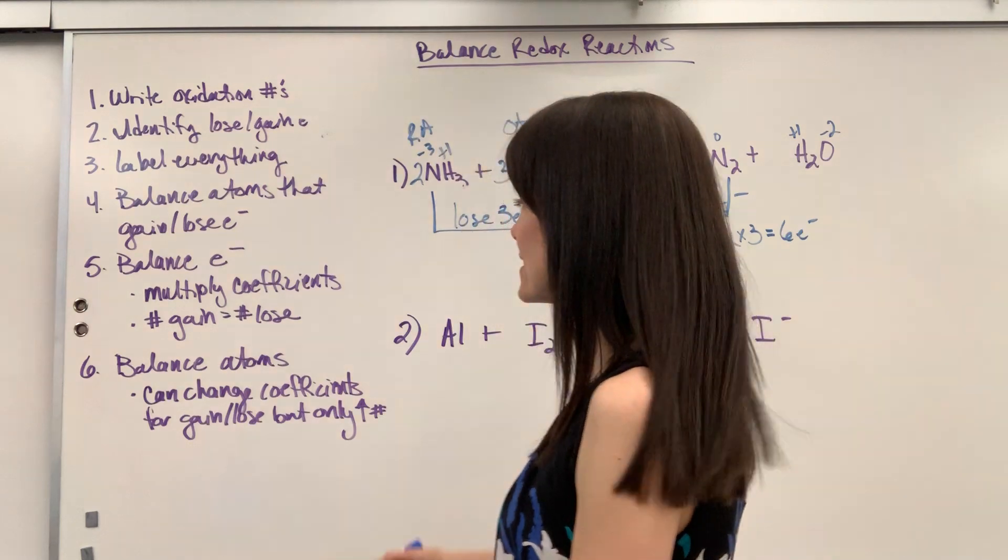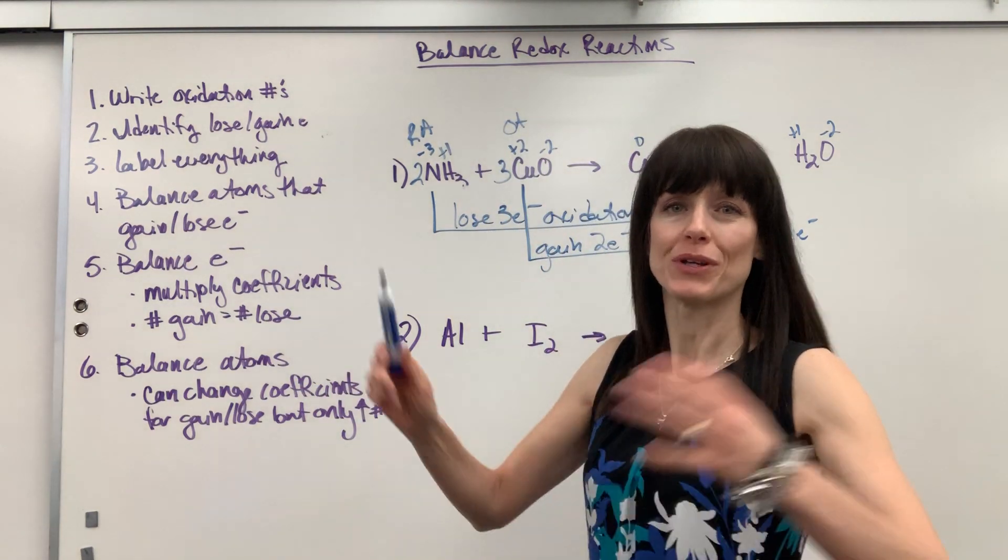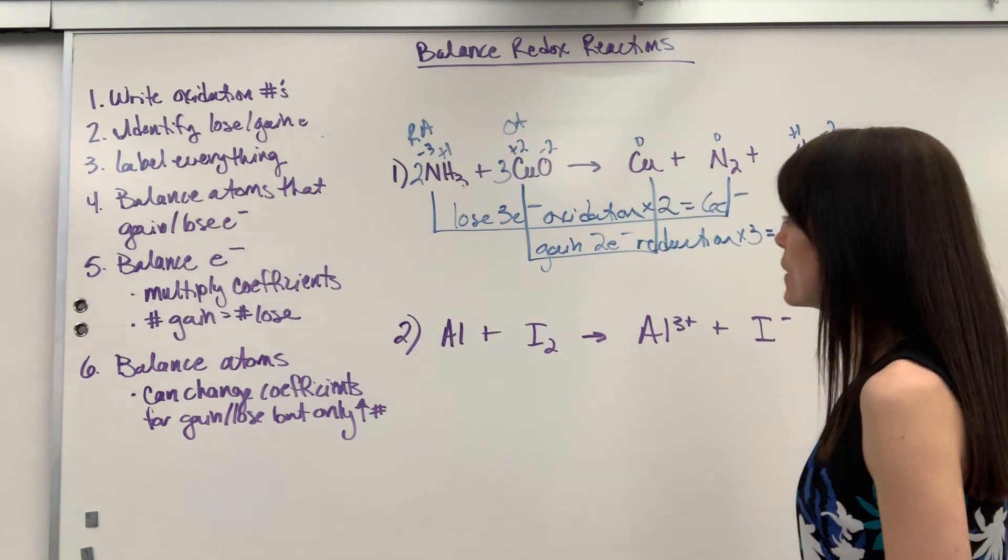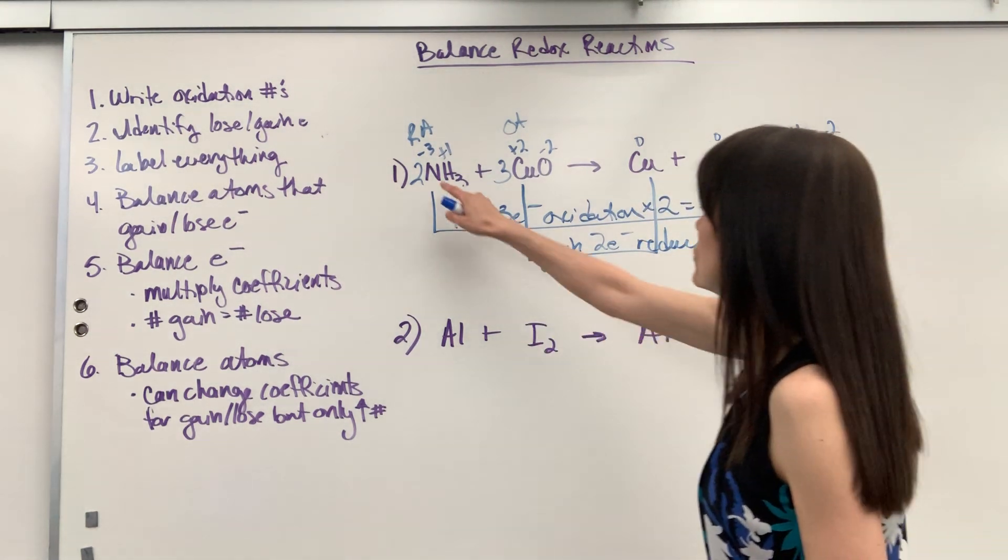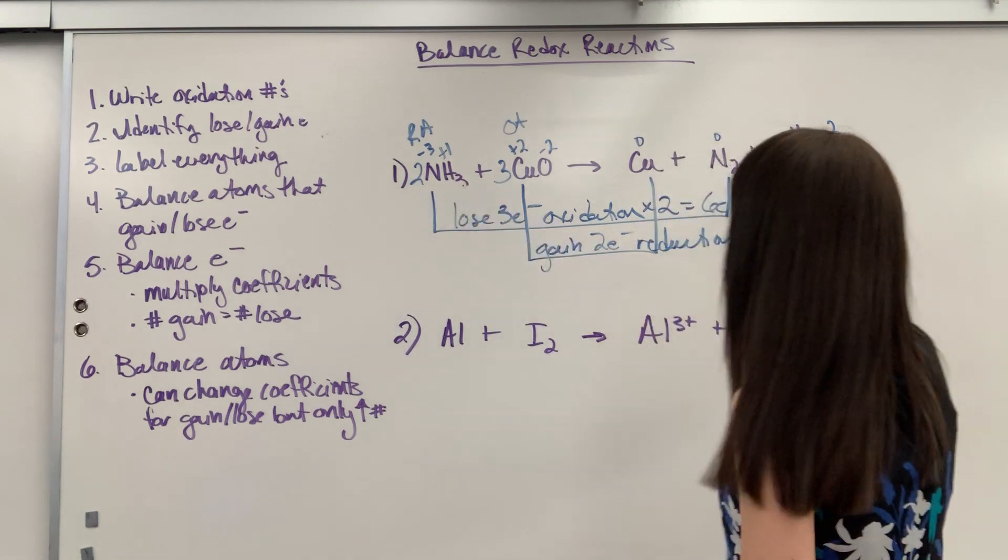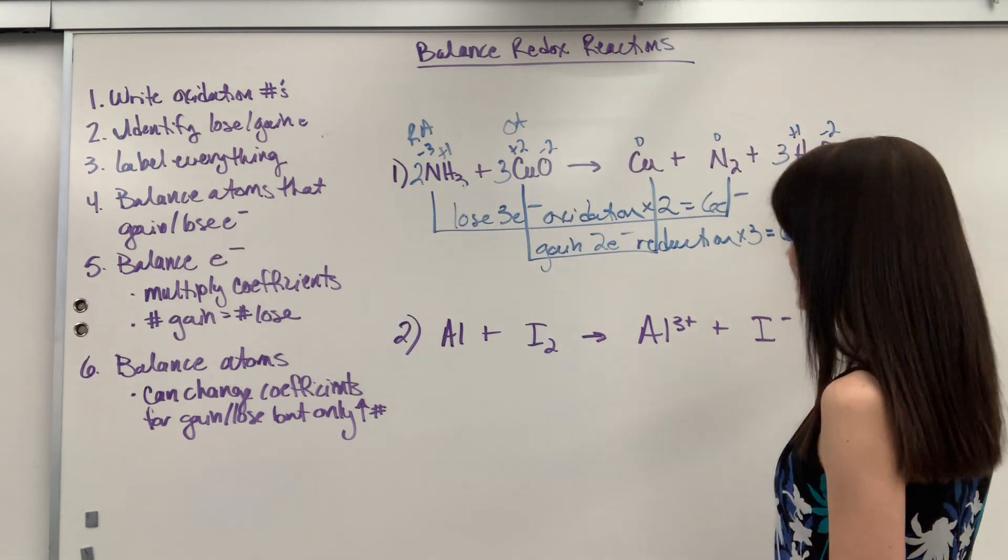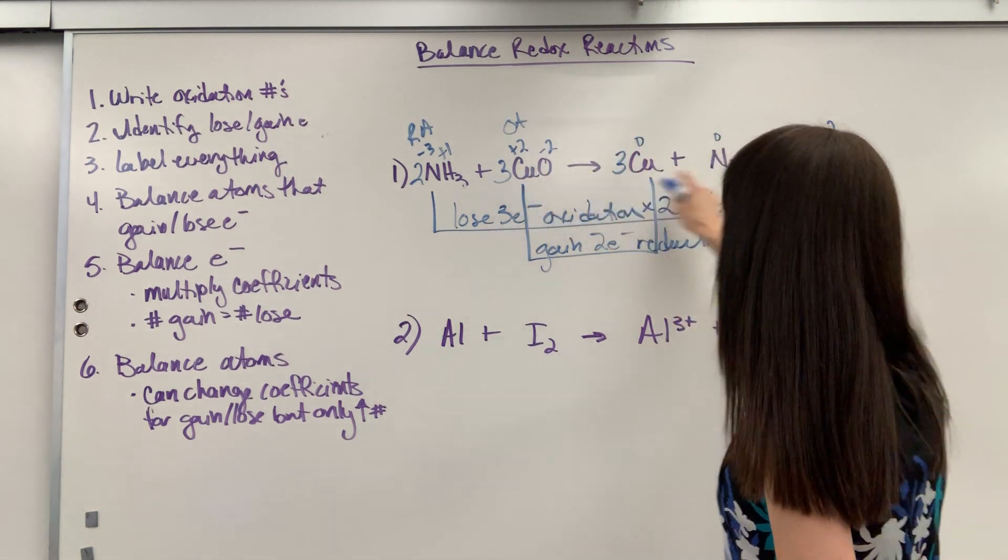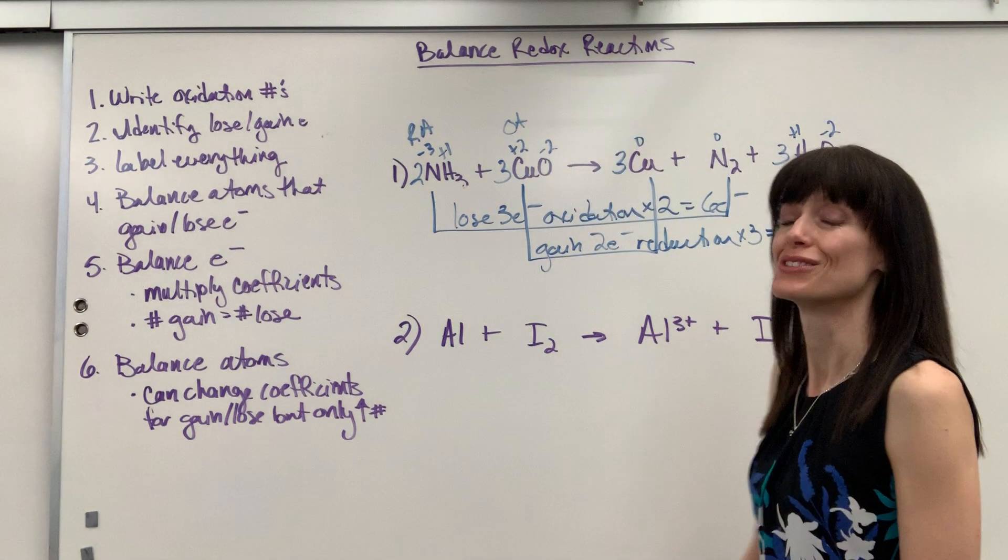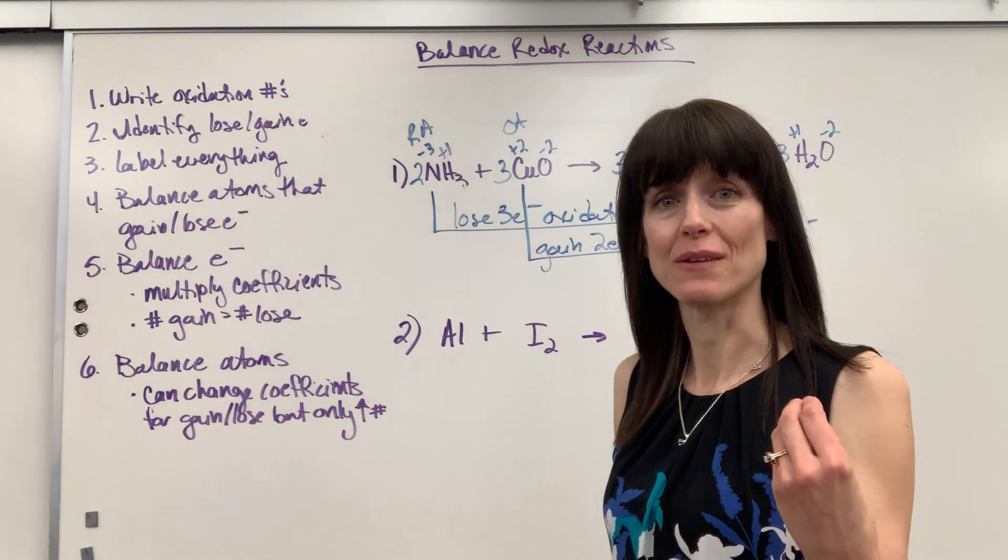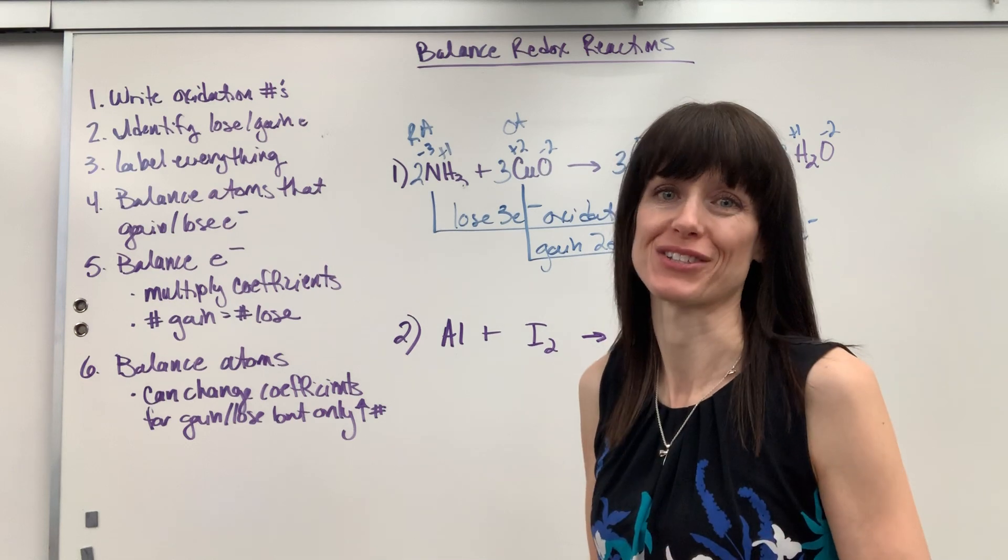Okay, last part. This is kind of the easy what you've done a lot of already: balance the atoms. So let's go ahead and count atoms. I've got two nitrogen, two nitrogen. We've got six hydrogen. Let's put a three right here. Six hydrogen. Nice. Three copper, three copper, three oxygen, three oxygen. So both the electrons, six and six, and the atoms are balanced. Our redox reaction is balanced.